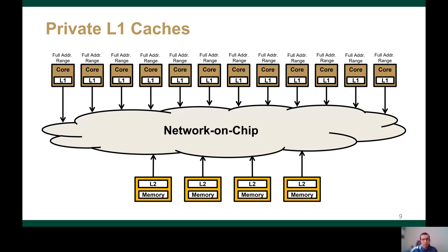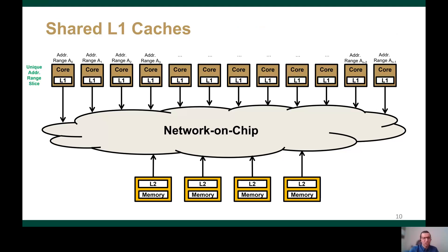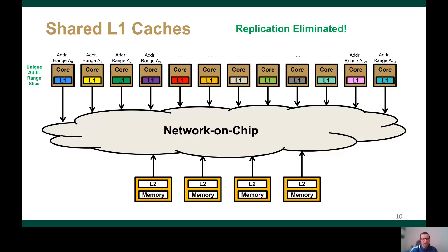As I mentioned before, in GPUs the private nature of the paired-core L1 caches enables each L1 cache to store any cache line from the full address range. This leads to data replication across the L1 caches, which can be considered as a waste of caching resources. On the other hand, a shared L1 cache design can be used to eliminate such waste. Specifically, under shared L1 caches, each L1 cache is responsible for storing cache lines from a unique address range slice, so replication across the L1 caches is eliminated as shown in this figure.